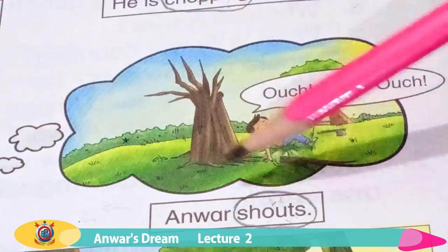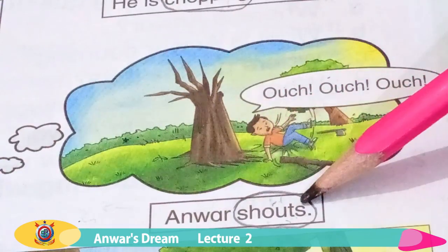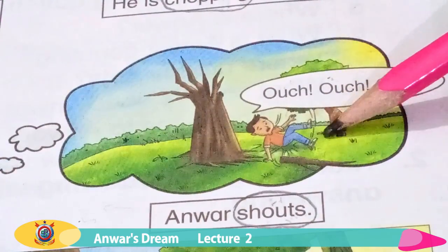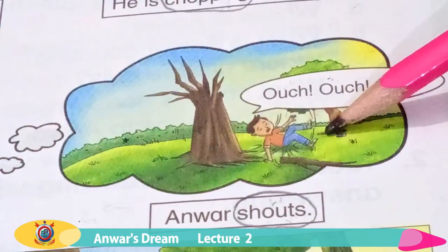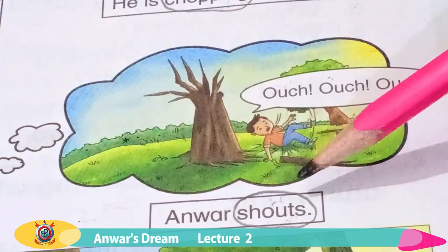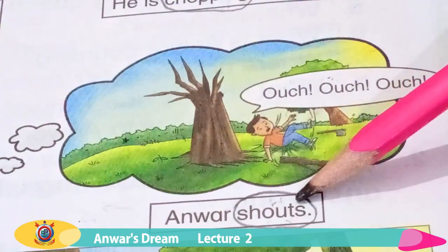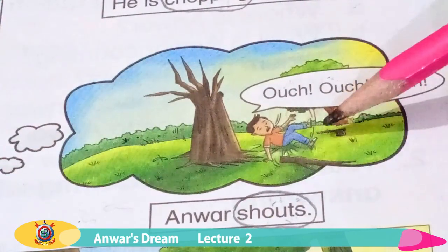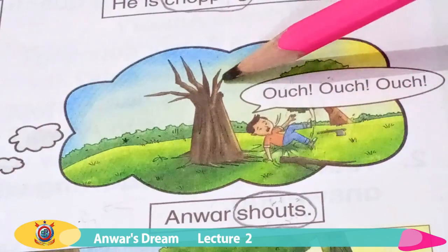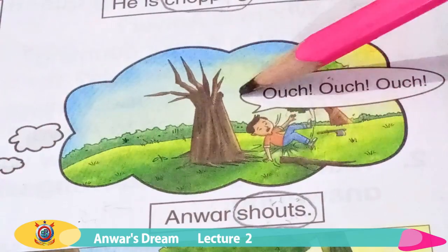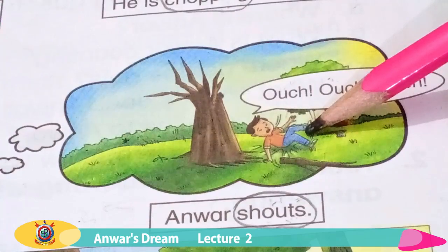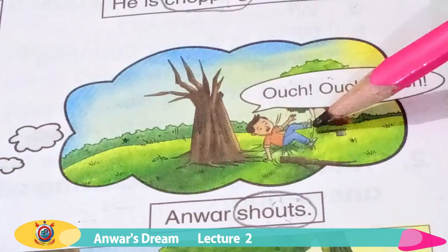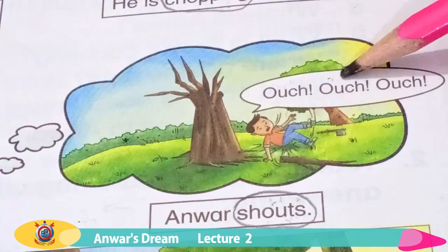Anwar shouts. Ouch, ouch! Why is he shouting? Why is Anwar shouting? Do you know the meaning of shout? Shout — shore karna. He is shouting because he falls down. Anwar niche gira, is liye Anwar shouts. Ouch, ouch!